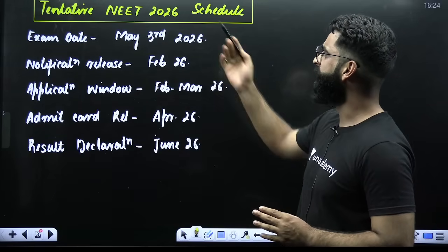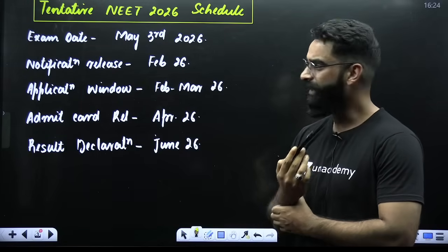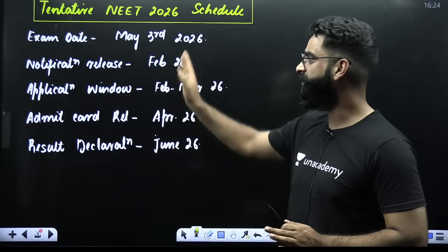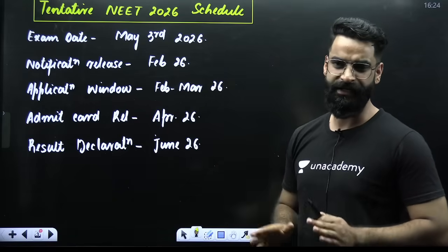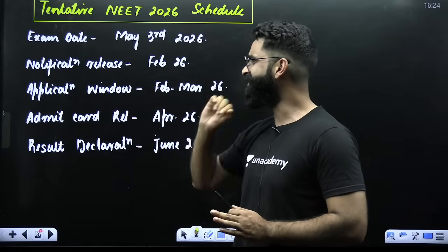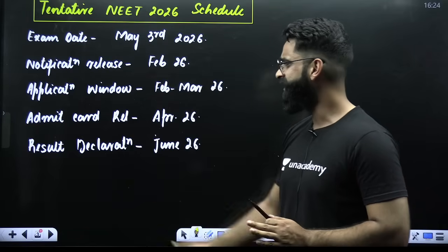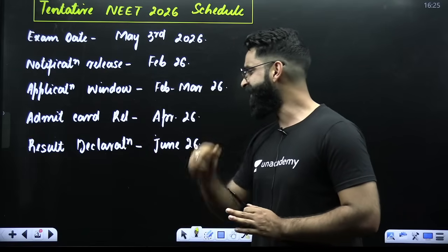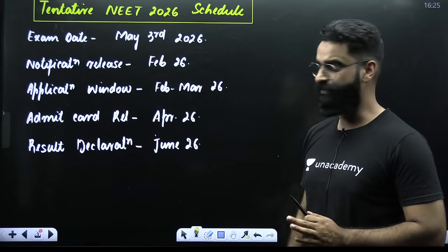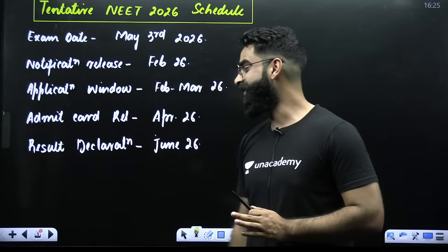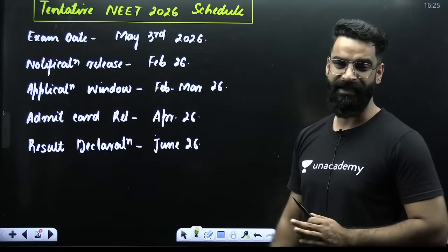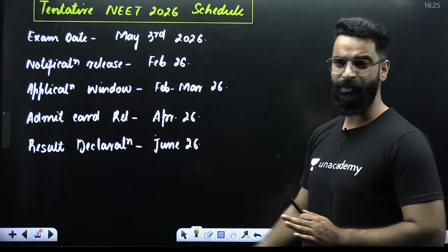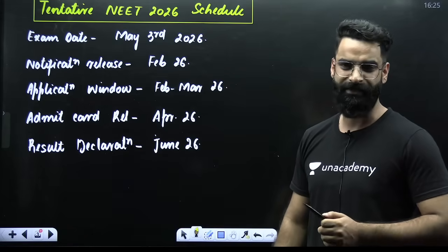Now, what are the tentative NEET 2026 schedules? The examination date tentatively will be May 3rd, 2026. The notification release date is going to be February 2026. The application window will be opening between February and March 2026. The admit card release date will be April 2026. And the NEET result will be declared in the month of June 2026.